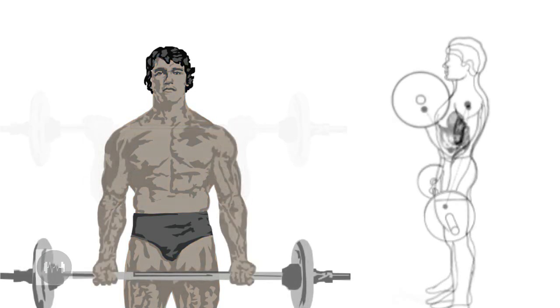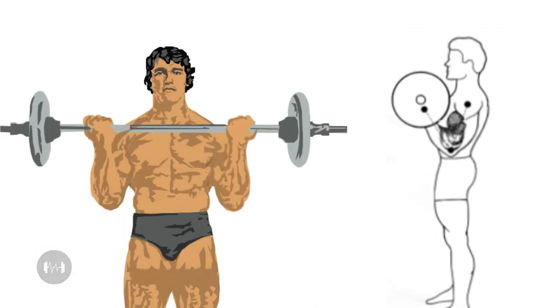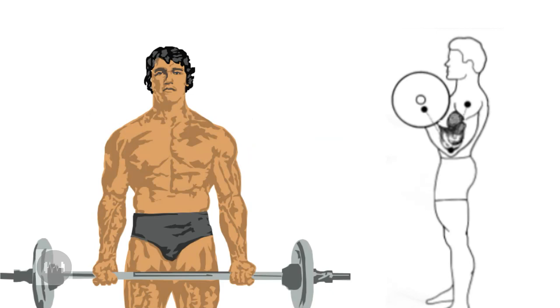The correct finishing position for barbell curls, the body upright without swaying, the elbows fixed at the sides. This strict form forces the biceps to do all the work, without any help from the back or the shoulders.